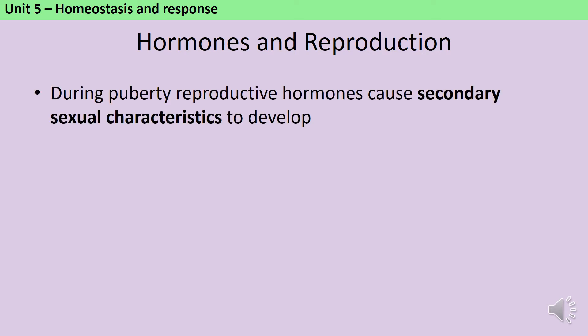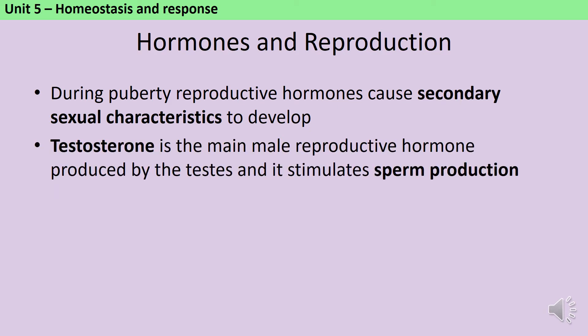During puberty, you start to develop secondary sexual characteristics as a result of the action of reproductive hormones. Your primary sexual characteristics are whether you have a penis or a vagina, whereas secondary sexual characteristics are things like developing breasts, starting menstruating, growing body hair or your voice changing. In males, the main reproductive hormone responsible for these changes is testosterone, and this is produced by the testes and it stimulates sperm production. In females, most of the secondary sexual characteristics are caused by oestrogen, which is produced in the ovary.